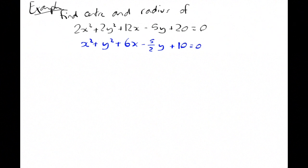Again, dealing with the x's, I get x plus half of the 6. So I get x plus 3 all squared minus the 9. Dealing with the y's, I get y minus 5 over 4 all squared. And take away that 5 over 4 squared, which is going to be 25 over 16. Plus 10 equals 0.